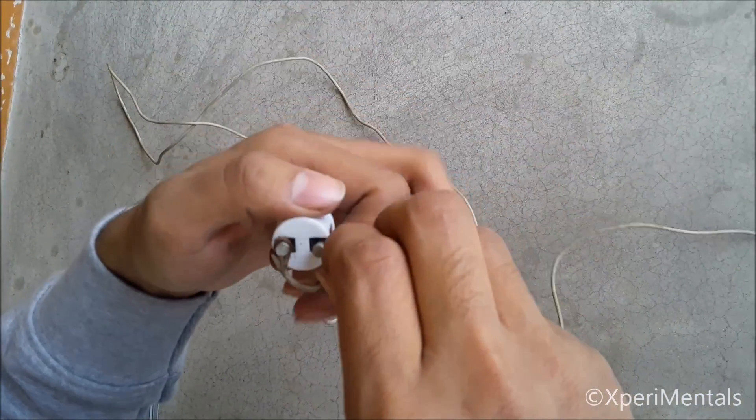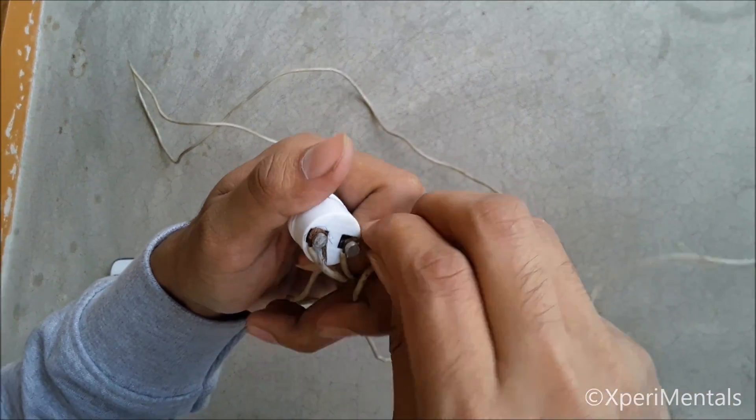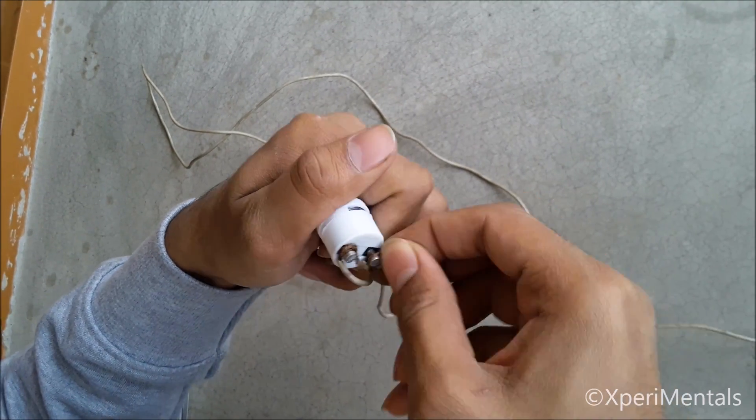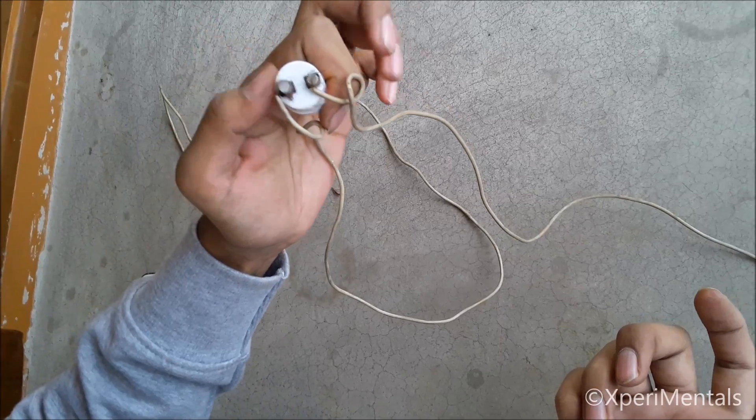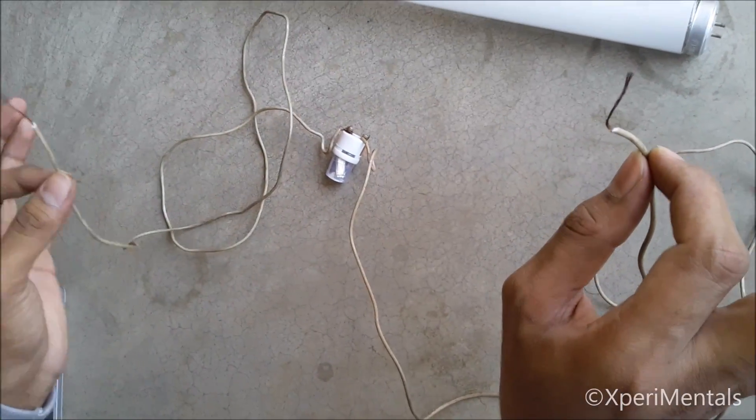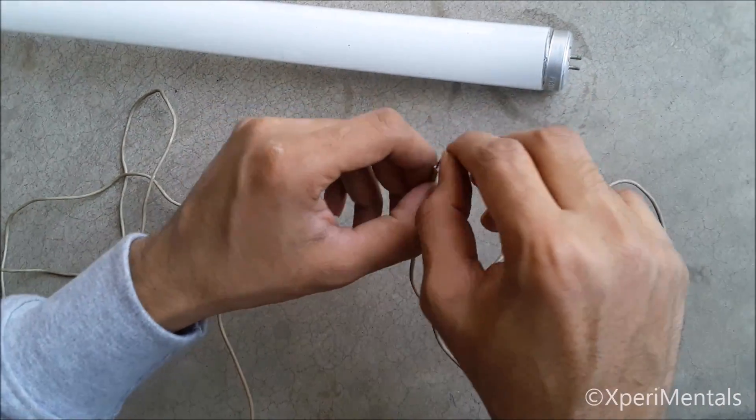This is another wire we will connect with the other point of the starter like this. Now connect the other ends of the wires with the tube light, one with this point.